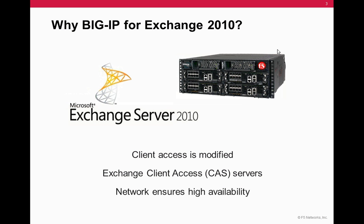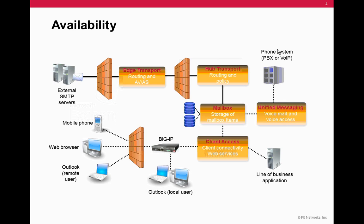High Availability for Client Access. Did you know that the architecture for client access changed with Exchange Server 2010? Previously, email clients such as Outlook were able to access the user inbox by connecting directly to a mailbox server. This is no longer the case. Starting with Exchange Server 2010, all email clients regardless of protocol must connect to the Exchange Client Access Server, or CAS Server.